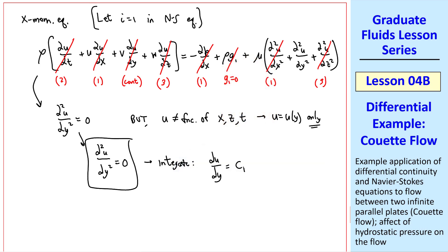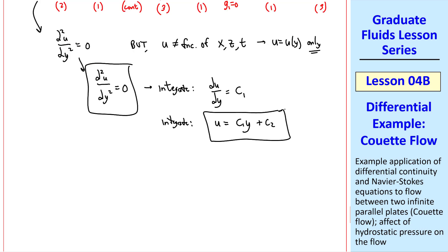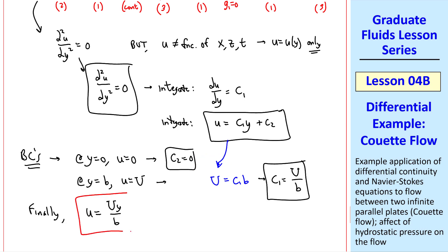We integrate once to get du dy equals some constant c1. We integrate again to get u equals c1 y plus some other constant of integration c2. This is our answer for u, but we apply the boundary conditions to find these constants. At y equals zero, there's no slip, so u equals zero. And when you plug y equals zero in here, and u equals zero here, you can see that c2 must be zero. And at the upper plate, u equals capital U. So this equation becomes capital U equals c1 times b, since the upper plate is at y equal b, and c2 was already found to be zero. So c1 is U over b. Finally then, u is just capital U, y over b, which is the solution to part c.